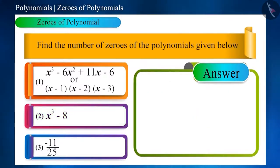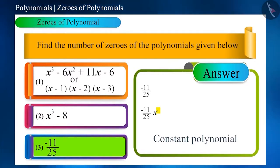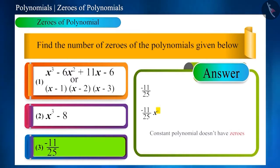Now, let us take the last option, -11/25. Is it a polynomial? This is a constant polynomial, which can be written with the highest power of variable as 0. Now, if the power is 0, then how many zeros will be there? That will also be 0. Or, we can say a constant polynomial is the only polynomial which does not have a zero.